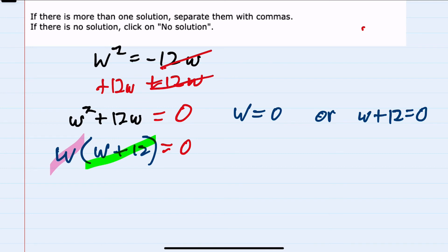From here, we already have one solution: w could be zero. The second possibility, if I were to solve this for w by subtracting the 12 from the left-hand side to isolate the w, that would give me the w by itself equals a negative 12. So this would be a second solution of w equals negative 12.